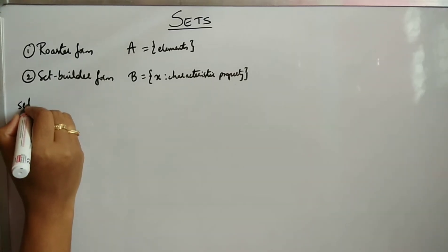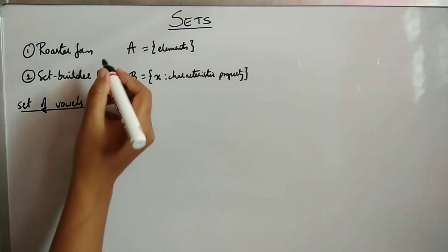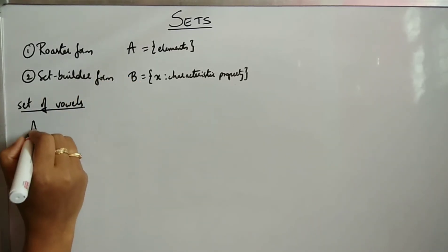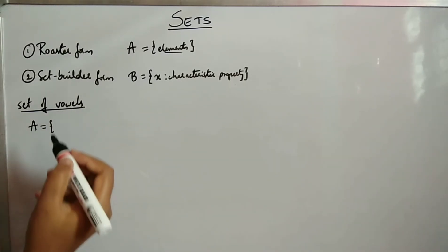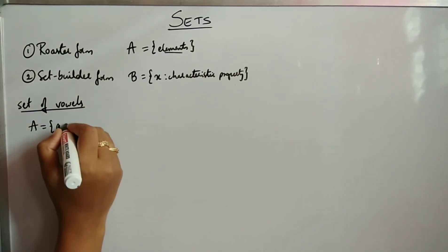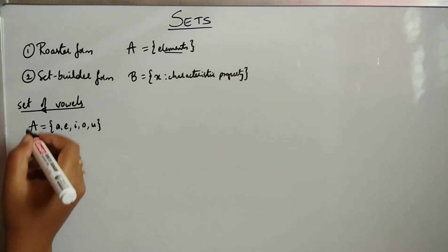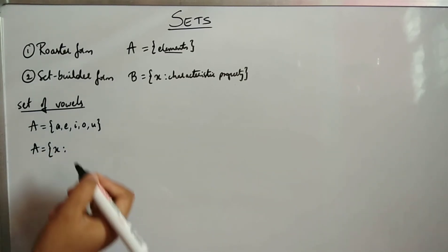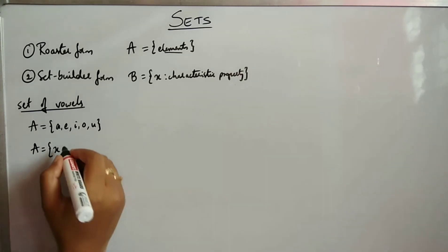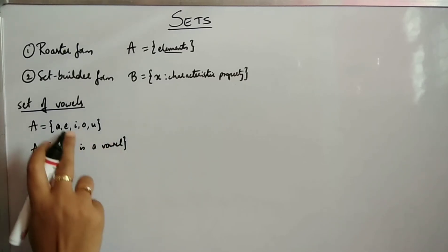Consider the set of vowels. In roster form we list all the elements: A, E, I, O, U. In set builder form we use a small letter — you can use any letter — followed by a colon and the characteristic property. Here the elements are vowels, so we write: x : x is a vowel.